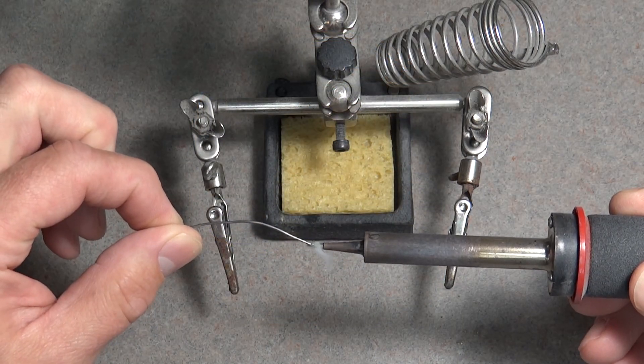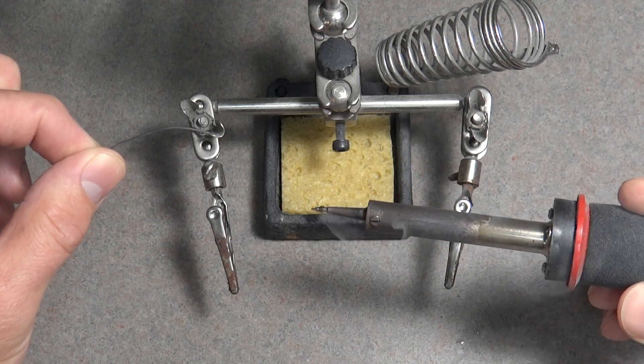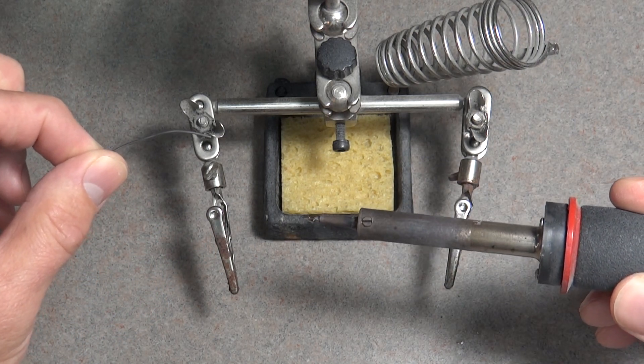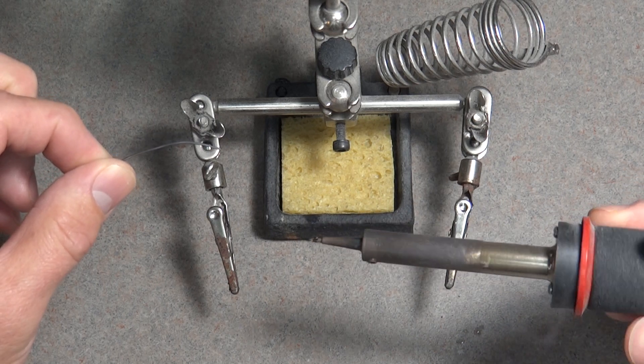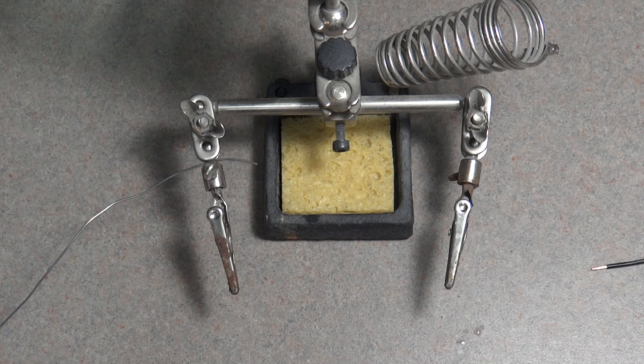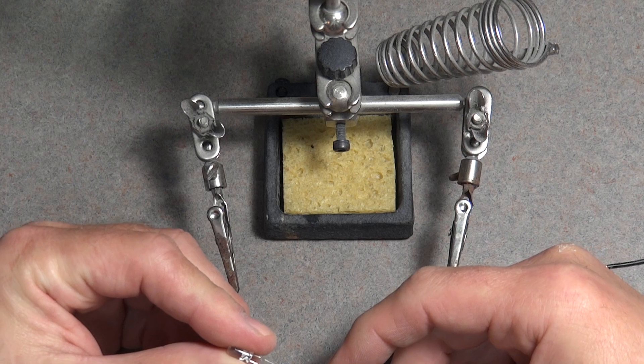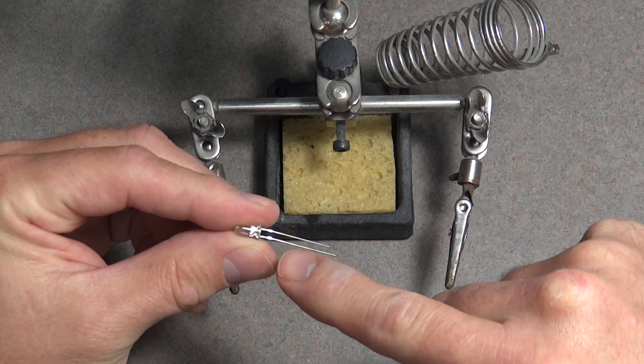After the tip is cleaned, you'll want to tin the tip of the iron. This is done by placing a small amount of solder to the tip, just enough to cover it. This will allow for better heat transfer so the soldering can be done quicker. The quicker you can solder it, the better. Too much time with that intense heat near your components increases the risk of damaging them.